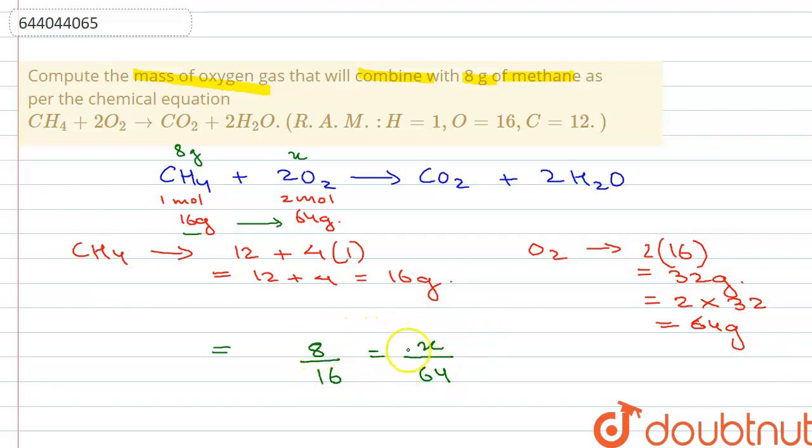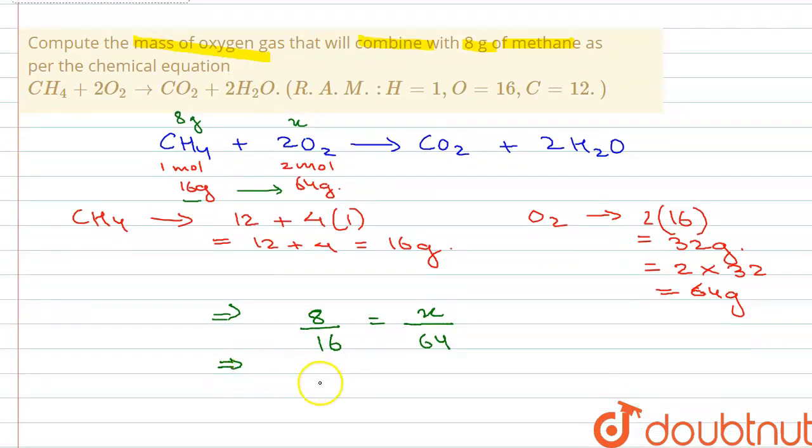So what we are going to do is we are going to cross multiply this equation that you are seeing here. So 64 will go on the left-hand side and will multiply with 8, which is divided by 16 to get x, which is equal to 32 grams. So 32 grams of oxygen is required to react with 8 grams of methane in order for the reaction to take place.